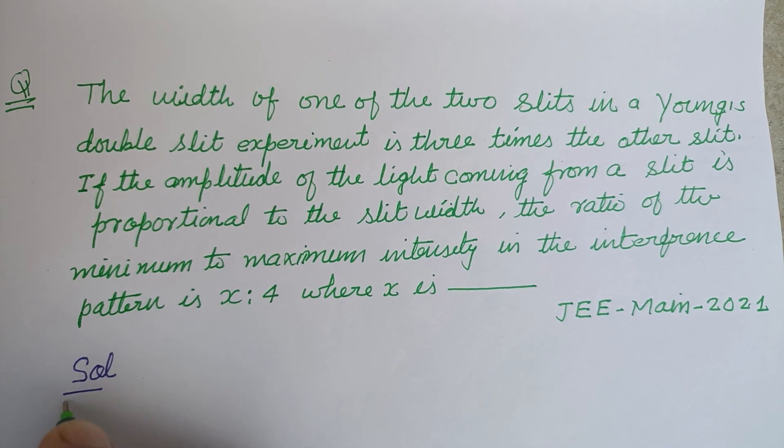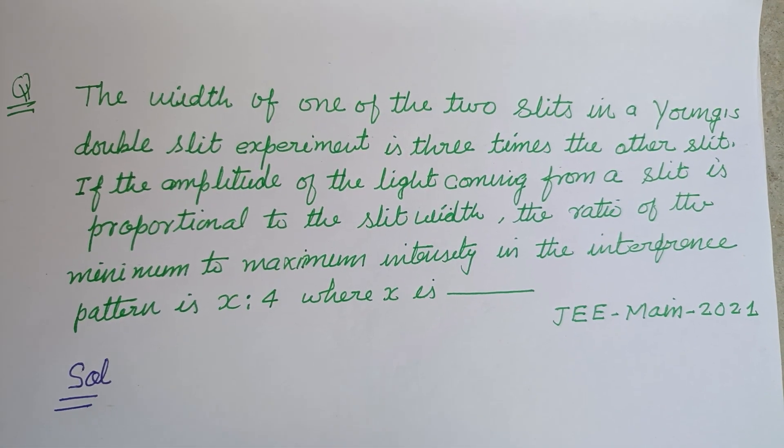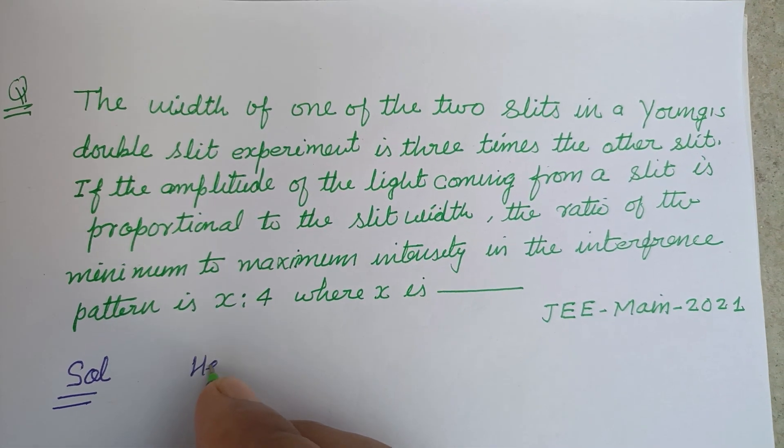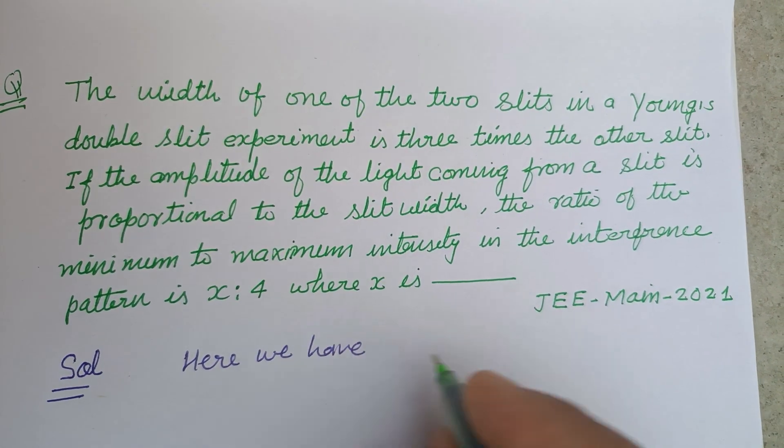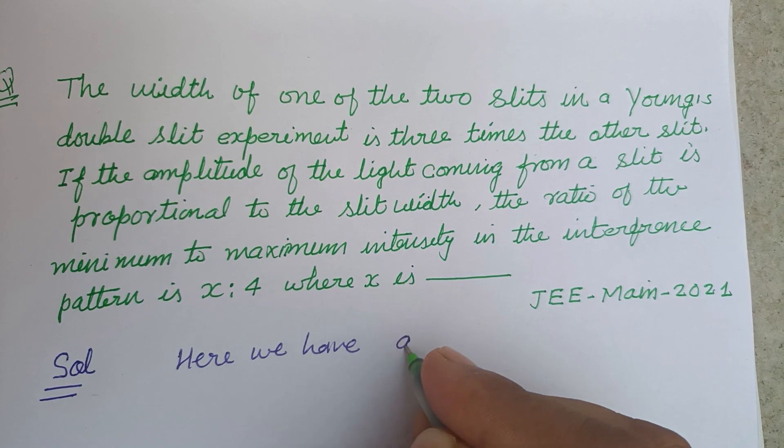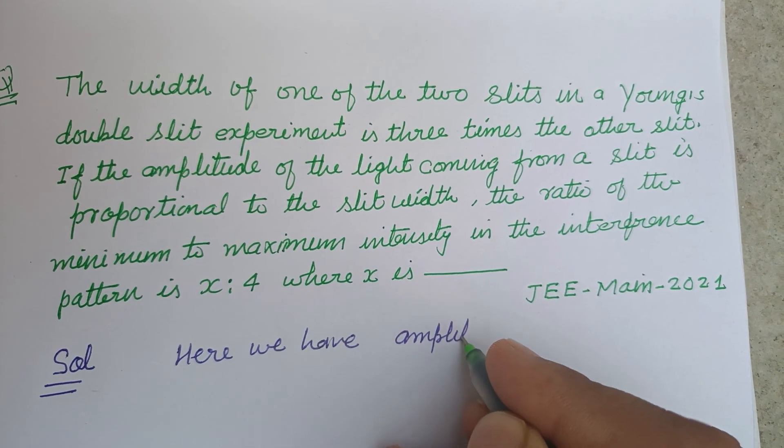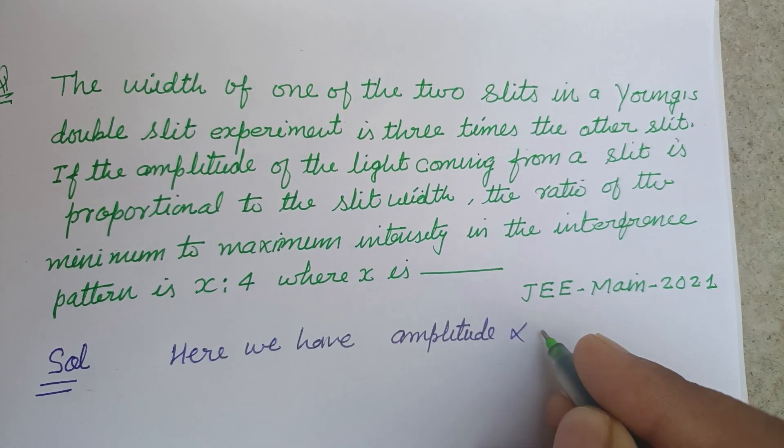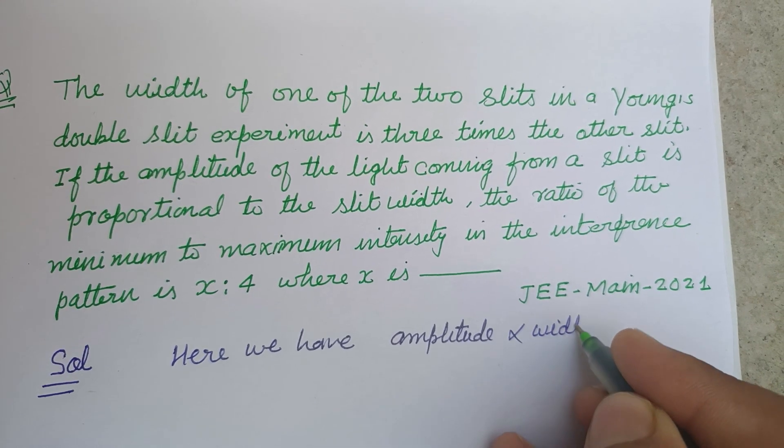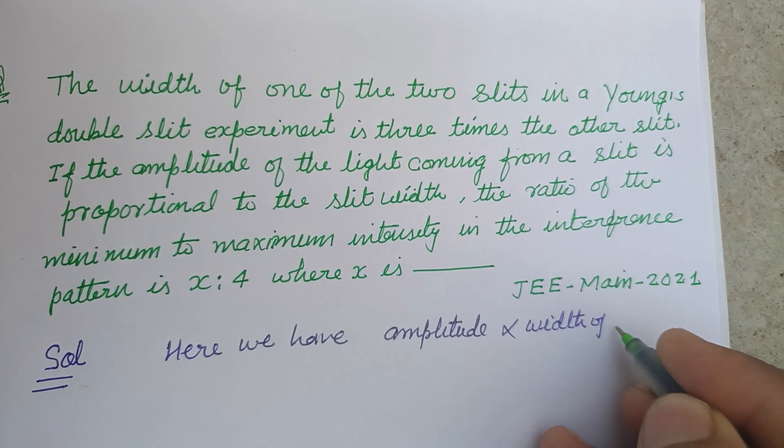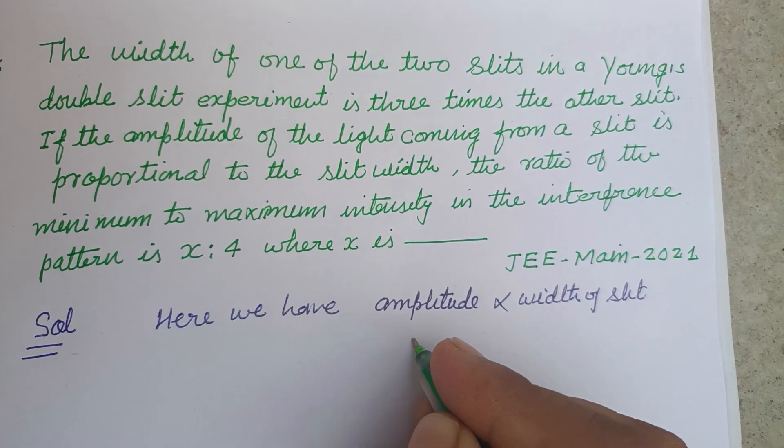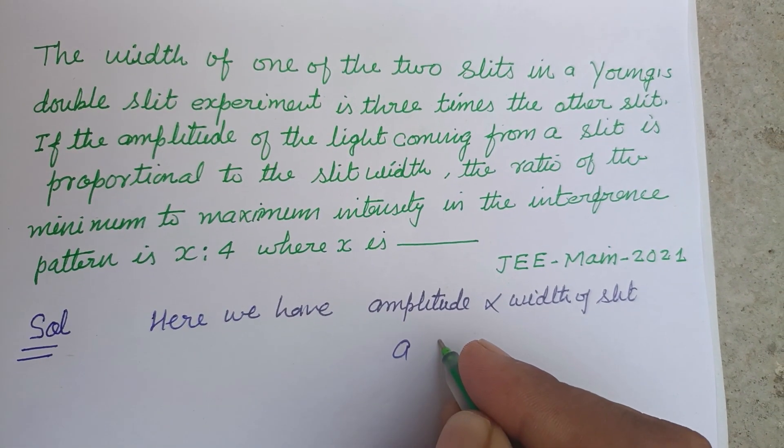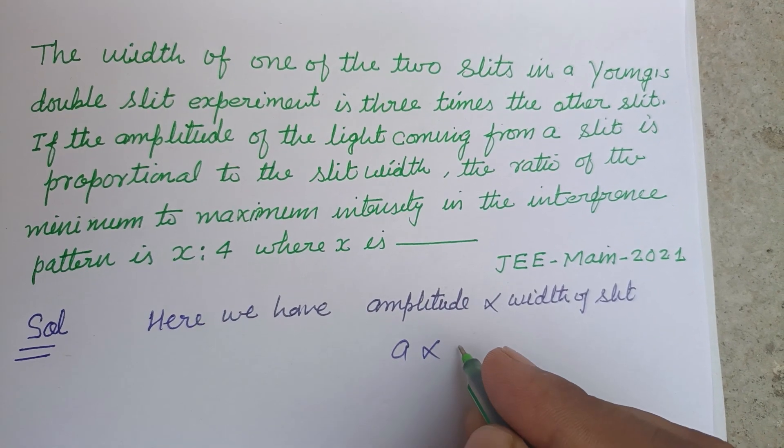So student, here we have amplitude is directly proportional to width of slit. It means A is directly proportional to D.